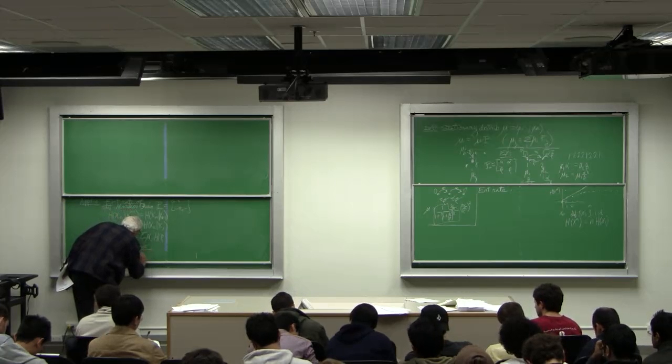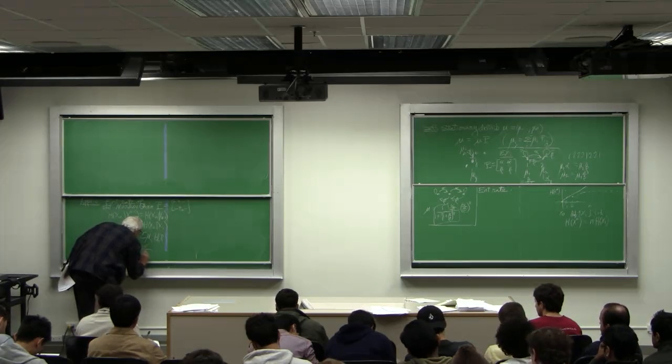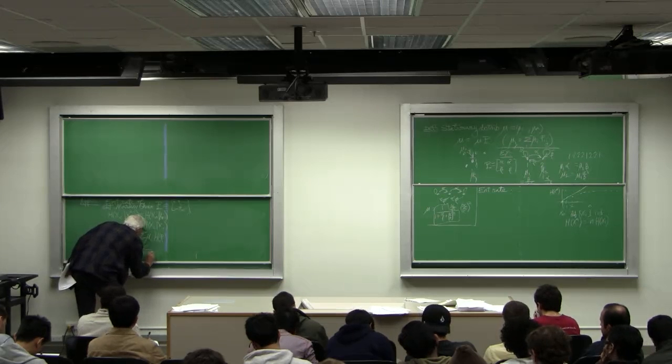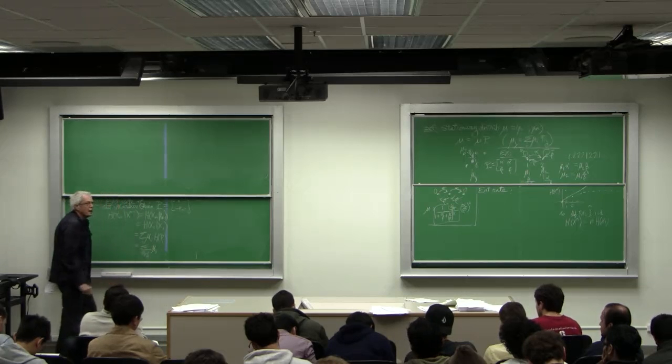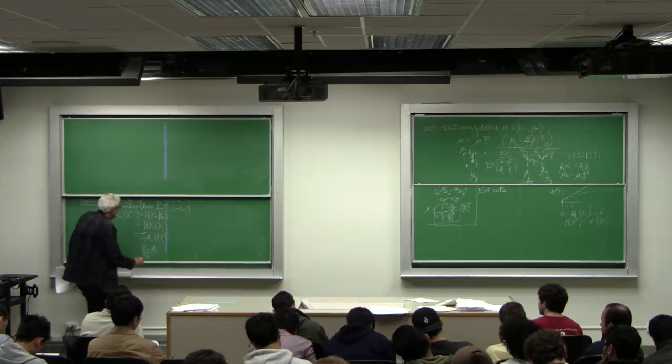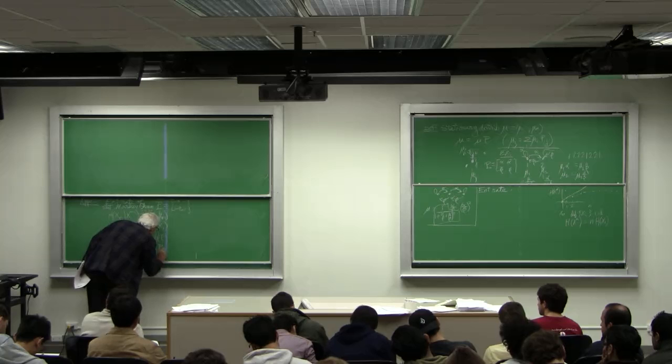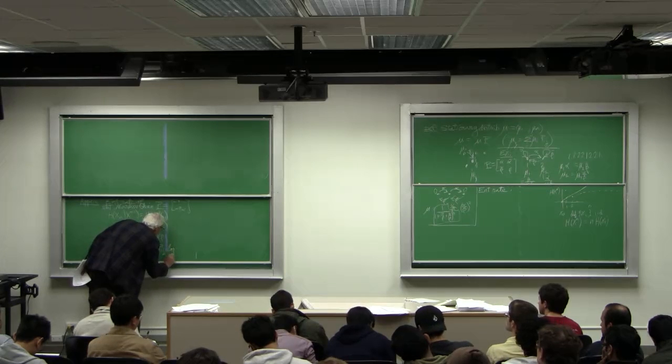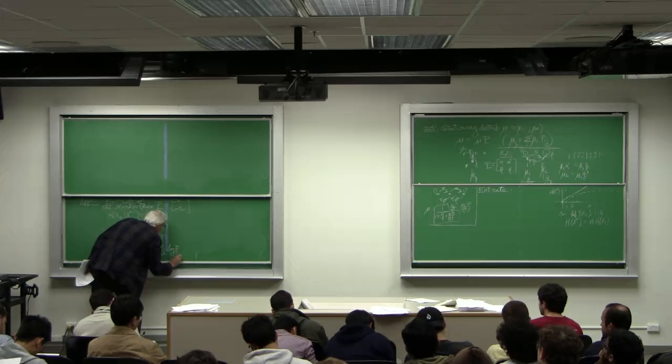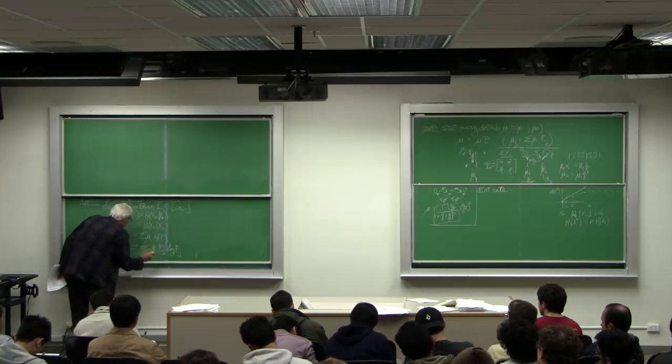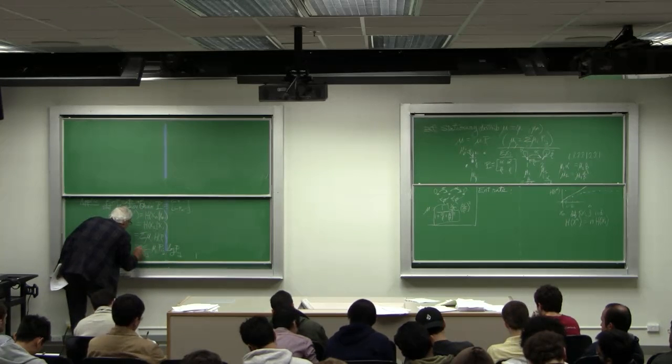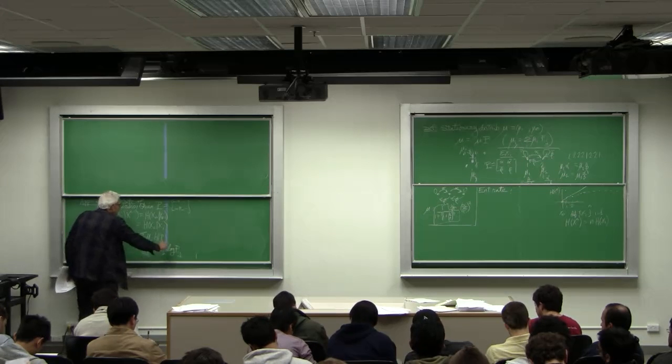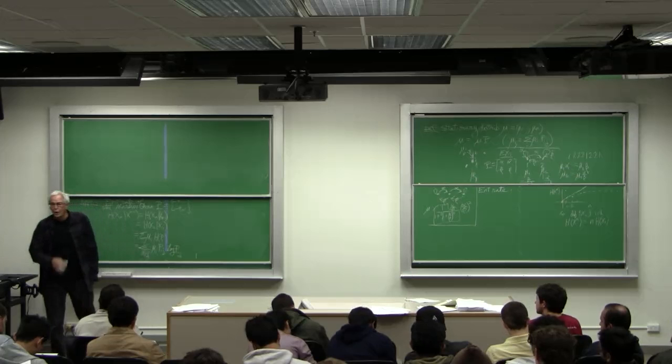So this becomes sum over i and j of the stationary probability associated with i times P_ij log P_ij. And that's summed over j.